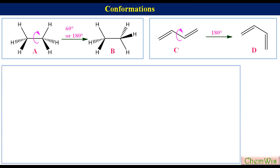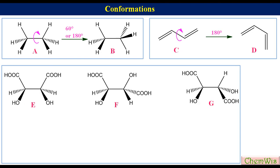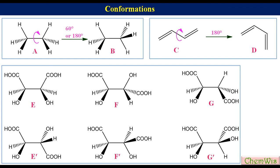Now let's take the example of tartaric acid. A few selected spatial arrangements of tartaric acid are E, F, G, E prime, F prime, and G prime. E can be converted to F by 120 degrees rotation of the right carbon about the C-C single bond. Similarly, 120 degrees rotation will convert F to G, and 180 degrees rotation will convert E to E prime.